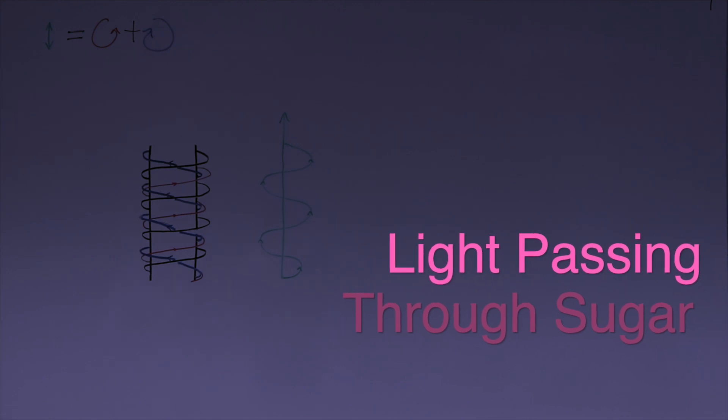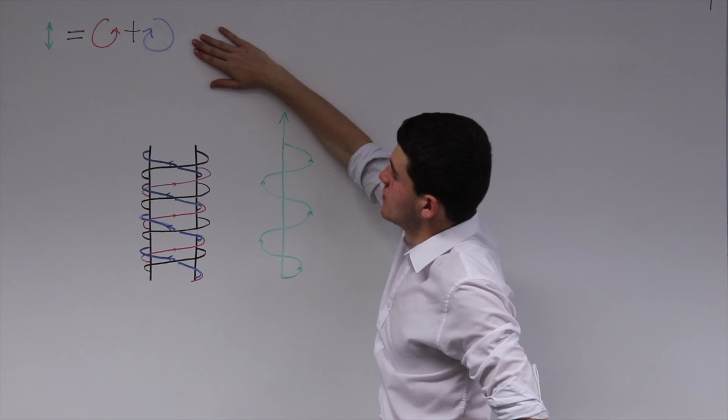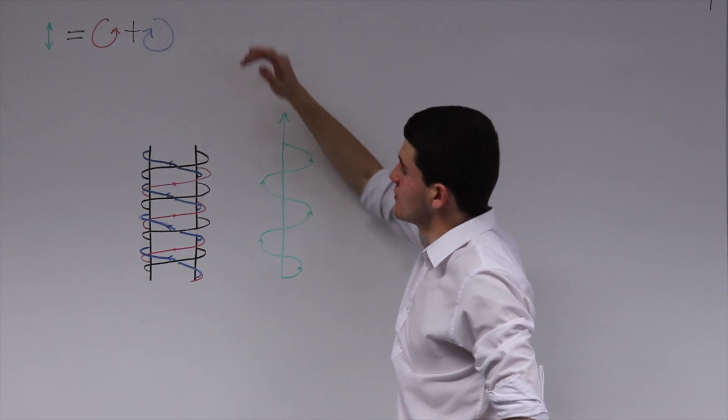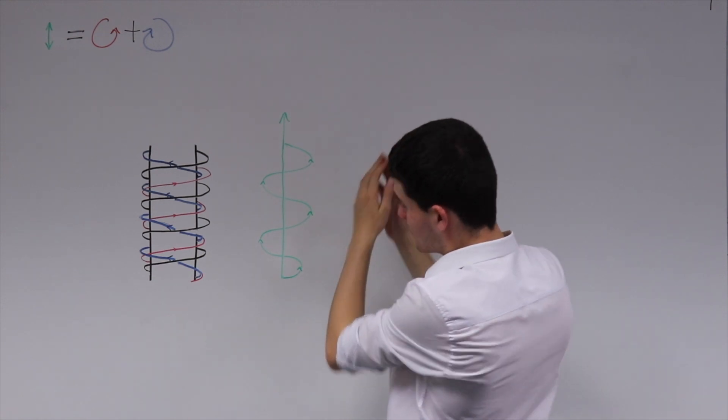Next, light passing through sugar molecules. As explained previously, a linear light wave can be expressed as the composition of two opposite circular ones. So if we look at this light wave traveling upwards, and this screw represents a sugar molecule in solution...